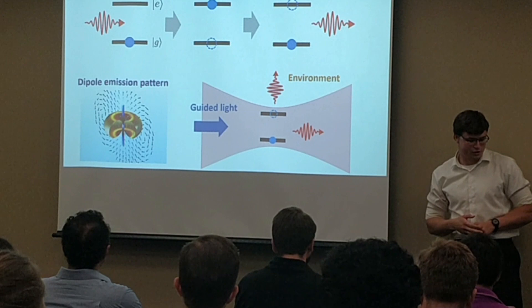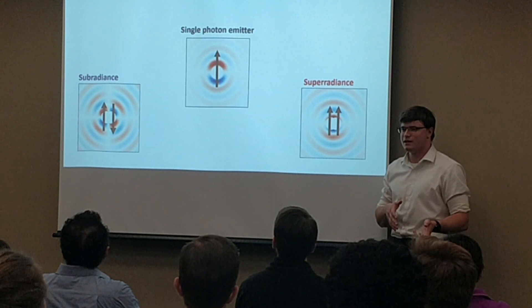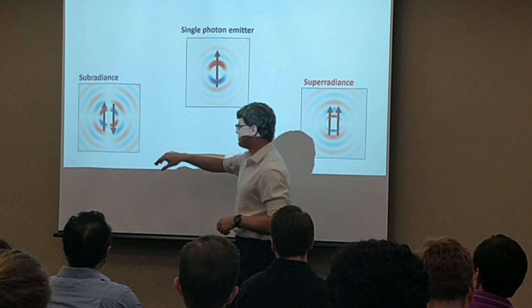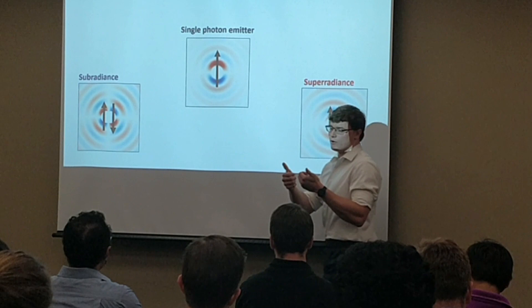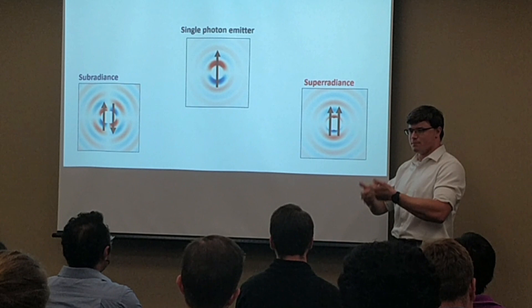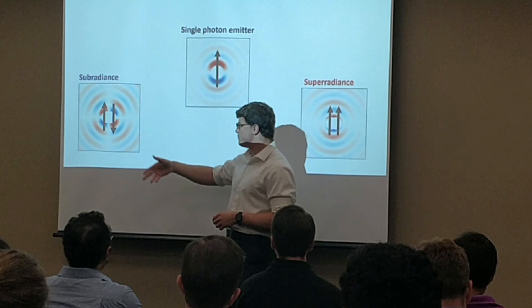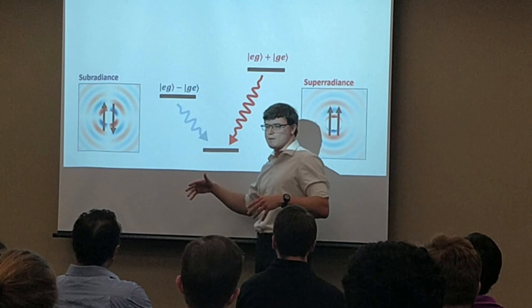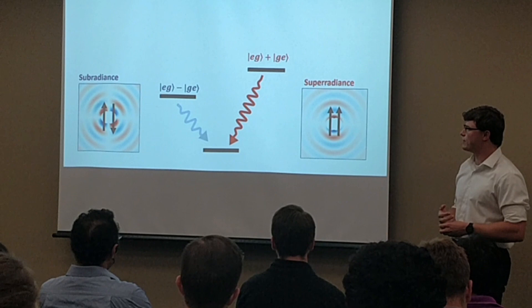One way to modify a system's interaction with light is to take single photon emitters and combine them together. If you have two single photon emitters with oscillating dipoles, and the dipoles are correlated and anti-symmetric, the total system has a quadrupolar radiation pattern. If they are correlated and symmetric, it's dipolar again. In the quantum picture, the symmetric state has a shorter lifetime and greater coupling to the environment — a brighter state — while the anti-symmetric state has a longer lifetime and decreased coupling to the environment.